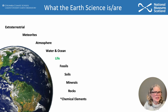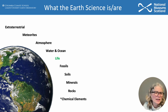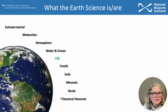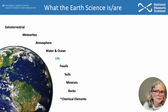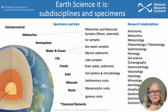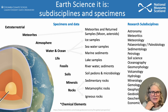So what are the Earth Sciences? I say Earth Sciences because it covers a huge variety of specimens and remits, starting from simple and small chemical elements, rocks, minerals, soils, fossils, all aspects of water, including atmosphere, meteorites, and even extraterrestrial. This means that there's a huge range of specimens, and therefore a huge range of sub-collections. There's also a huge range of sub-disciplines, shown here on the right.